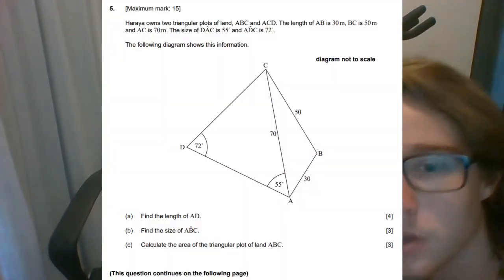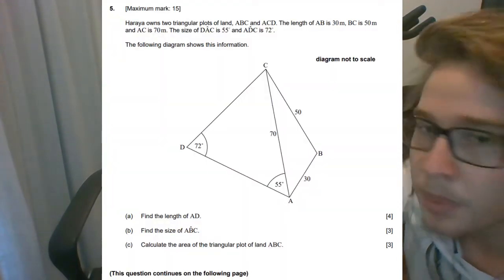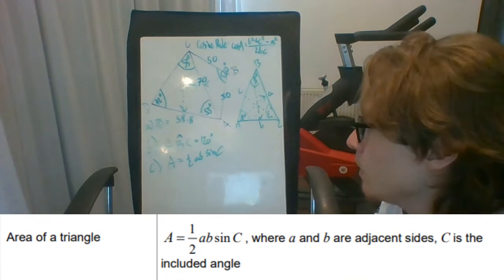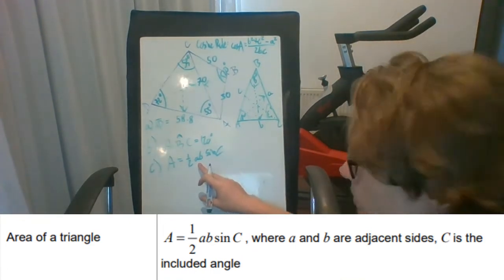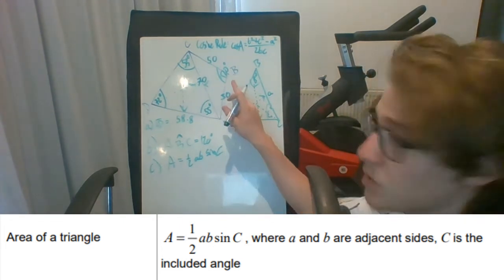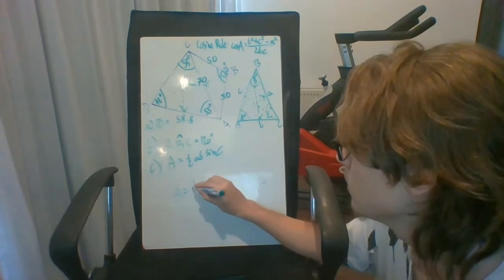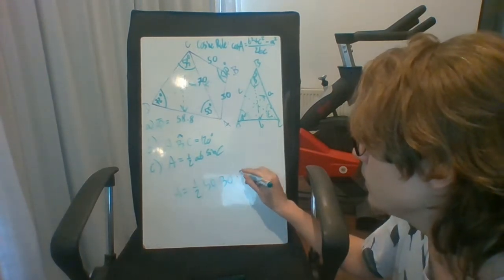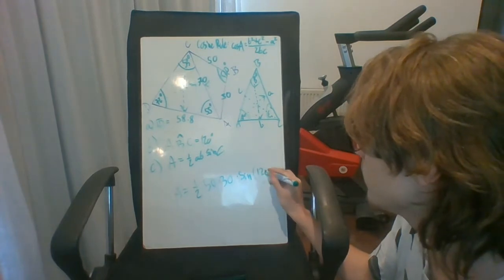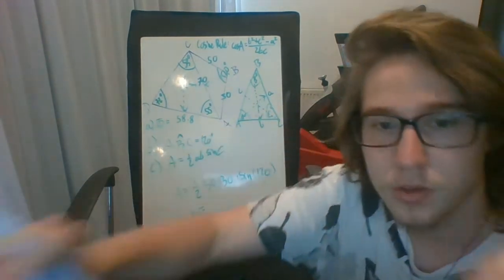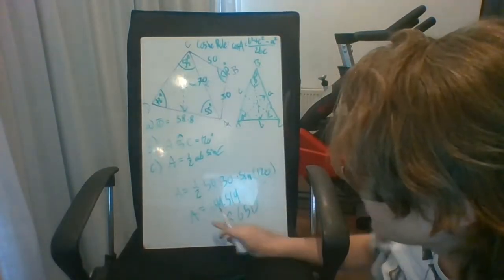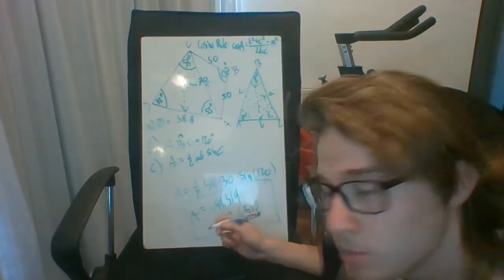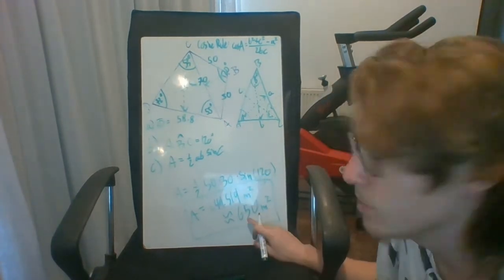Part C tells us to calculate the area of the triangle plot of land ABC, which is the one on the right. Conveniently in the formula booklet, there's this equation for the area of a triangle, where A and B are the adjacent sides to the angle that we have. In this case, the angle that we have is 120, and the adjacent sides would be 50 and 30. So we're going to have one half times 50 times 30 times sine 120. We put this whole chunk into the calculator, and the area of the triangle ABC is going to be 649.519. The answer is not done yet, units are always important, so meters squared. You can estimate it to 650 as well.